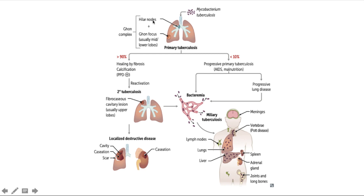As you can see, there are hilar nodes in this region. The Ghon focus is usually seen in the mid or lower lobes — this is your primary tuberculosis infection when you first get it. Right now it is not a disease; we do not treat primary tuberculosis as a disease. In 90% of cases, the Ghon focus will heal by fibrosis and calcification.